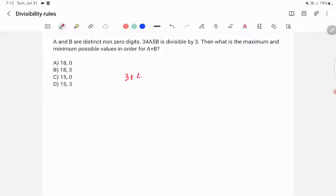Sum of digits is 3 plus 4 plus A plus 5 plus B. So this is 3 plus 4 is 7, 7 plus 5 is 12. So this becomes 12 plus A plus B.